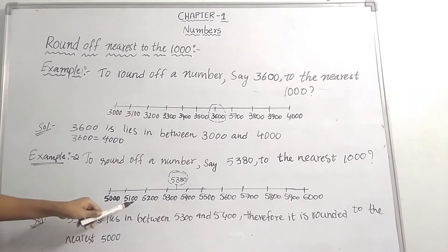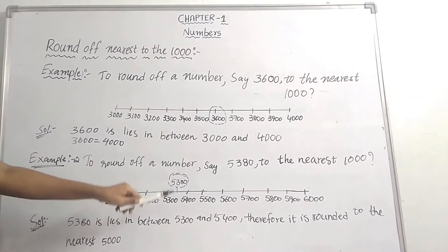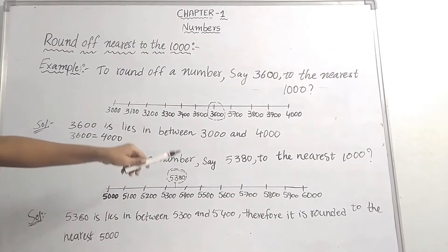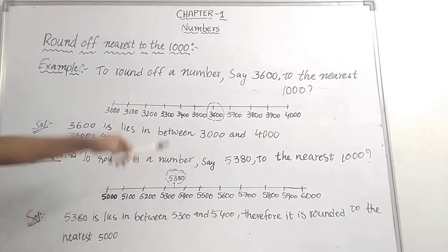5000, 5100, 5200, 5300, 5400, 5500, 5600, 5700, 5800, 5900, and 6000.